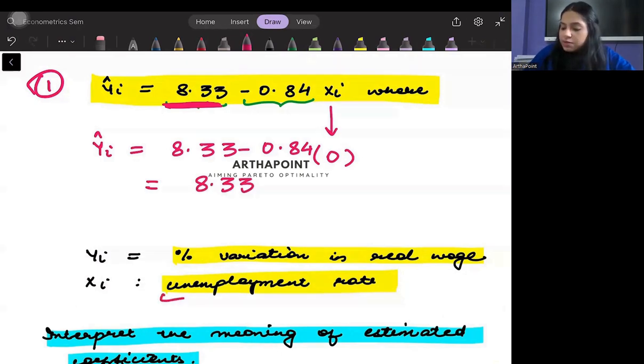So it means that when my unemployment rate in the economy is 0, then the percentage change in real wage will come by 8.33%.